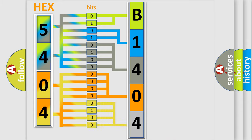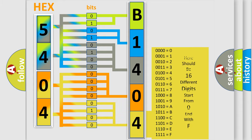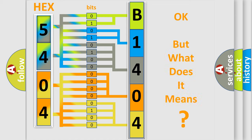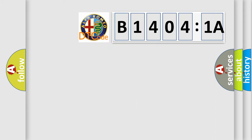A single byte conceals 256 possible combinations. We now know in what way the diagnostic tool translates the received information into a more comprehensible format. The number itself does not make sense to us if we cannot assign information about what it actually expresses. So, what does the diagnostic trouble code B14041A interpret specifically for Alfa Romeo car manufacturers?